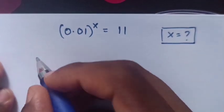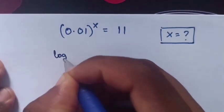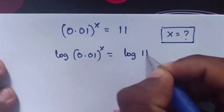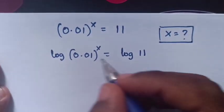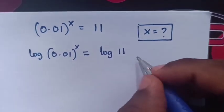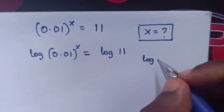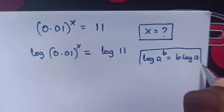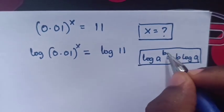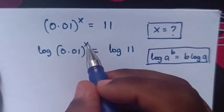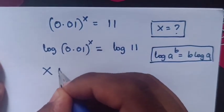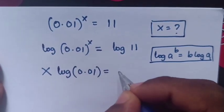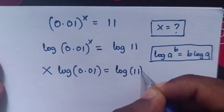First we apply log to both sides, so it will be log(0.01)^x = log(11). Then, from log(0.01)^x, we apply the rule that log(a^b) = b·log(a). So the power will move to the front, and in our equation x will move here. So it becomes x·log(0.01) = log(11).